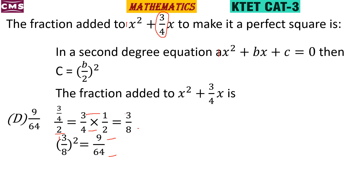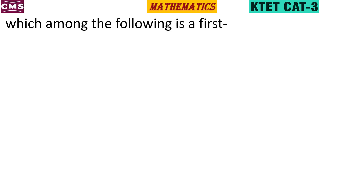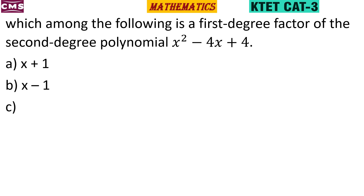The answer is option D. Next question: which among the following is the first degree factor of the second degree polynomial x² - 4x + 4? We need to find one factor of x² - 4x + 4.